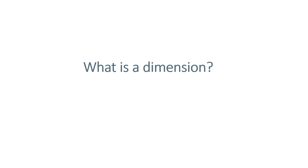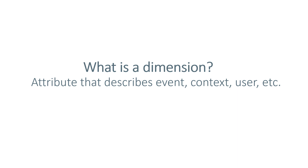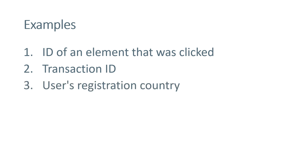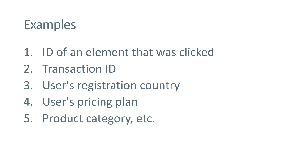So what is a dimension? It is an attribute that describes something — a product, an event, a user, or something else. Examples of custom dimensions include the ID of an element that was clicked. If you have several important buttons on a page, each with a different ID, that ID is used to distinguish in your reports which exact button was clicked. Another example could be a transaction ID, or a user's registration country, or user's pricing plan. You can also have product category, product ID, and product name.